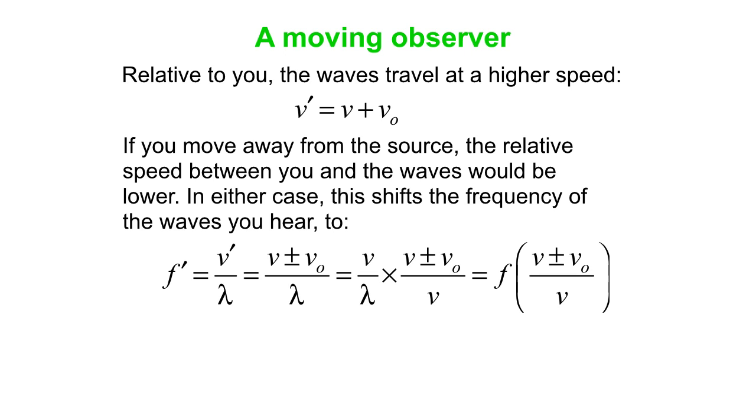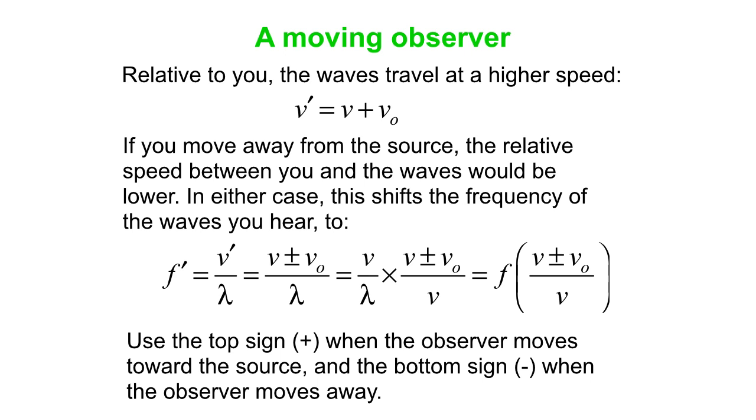Okay, so we'll say, in general, the observed frequency F prime is the new effective speed V prime over lambda. V prime we write as V plus or minus V O. And we use the plus sign when the observer moves toward the source and the minus sign when the observer moves away. Okay, so we can take our equation V plus or minus V O over lambda, multiply it simply through by V over V. And we get V over lambda, but that's just what F is, the original F, which you would hear if you were at rest. And that's multiplied by V plus or minus V O over V. So you see there's a shift in the frequency by this factor V plus or minus V O over V.